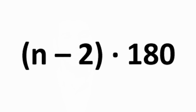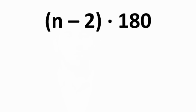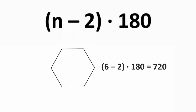Here is one last formula: the total number of degrees in the interior of an n-sided polygon is n minus 2 times 180. For example, a six-sided polygon or hexagon has 6 minus 2 times 180 equals 720 degrees in its interior — meaning the interior angles of a hexagon all add up to 720 degrees.